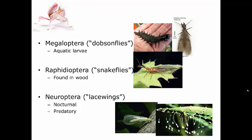Let's start with Megaloptera, commonly known as dobson flies, alder flies, or fish flies. These are relatively large insects — look at that aquatic larvae on that hand, that's really really large. The adults are also very big; they have large clear wings that they fold backwards over their abdomen, and you can see these really big pincher mouthparts and large wings.